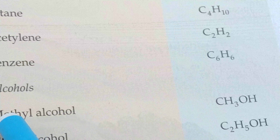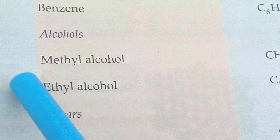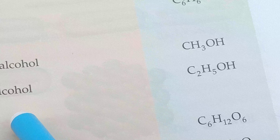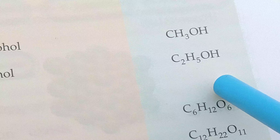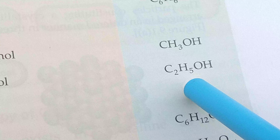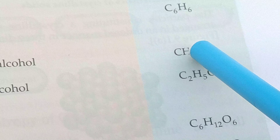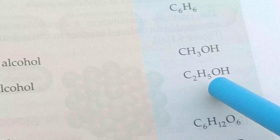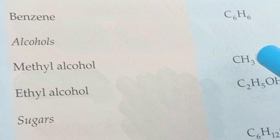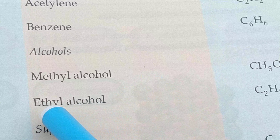Benzene is C₆H₆. Alcohol are of two types: methyl alcohol (CH₃OH) and ethyl alcohol (C₂H₅OH). Looking at the molecular formulas, the number of carbon atoms is 1 and 2 respectively, and the number of hydrogen atoms is 3 and 5 — so the number of atoms is different for each alcohol.